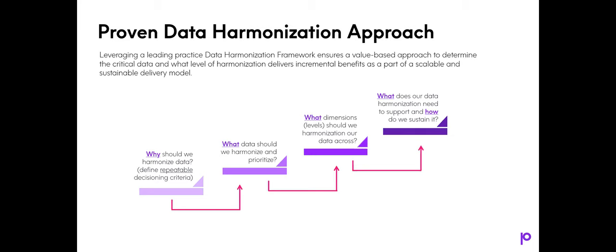We need to think about what our harmonization and governance efforts need to support. Our approach and tactics can vary significantly based on what we're trying to achieve. For instance, the depth of harmonization needs to be much greater if we're supporting cross-platform syndication of the data versus reporting and analytics. Beyond syndication and R&A, we typically want to evaluate metrics, regulatory and compliance requirements, and potential system constraints.